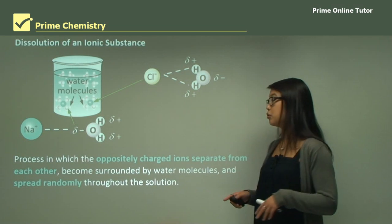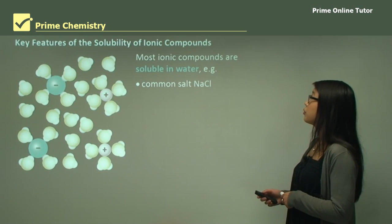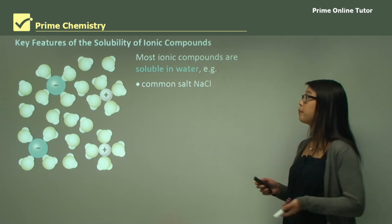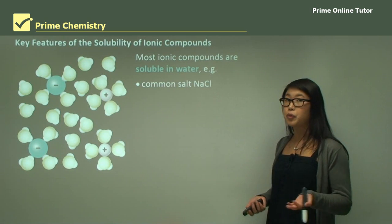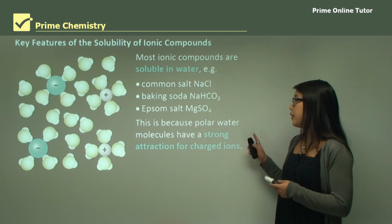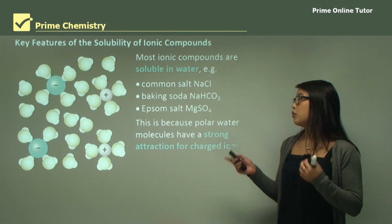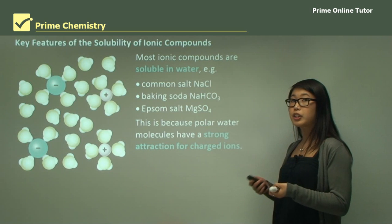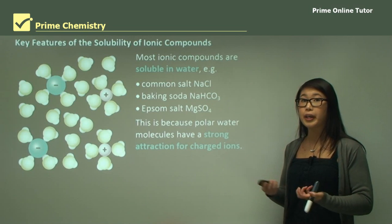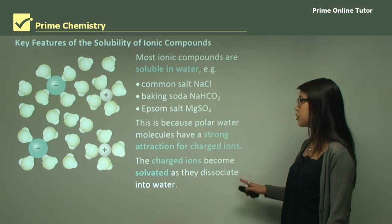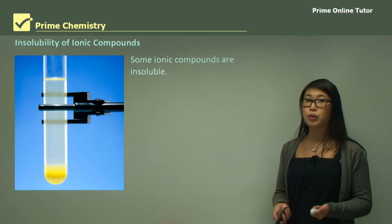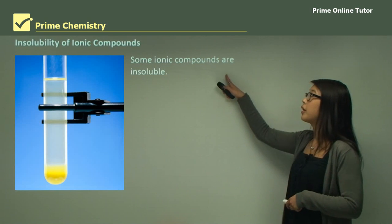Key features of solubility of ionic compounds: most ionic compounds are soluble in water — for example, sodium chloride, baking soda, and Epsom salt. This is because polar water molecules can attract the ionic charges in the lattice structure of these salts, causing the crystal structure to break up. The charged ions then become solvated as they dissociate into the water.